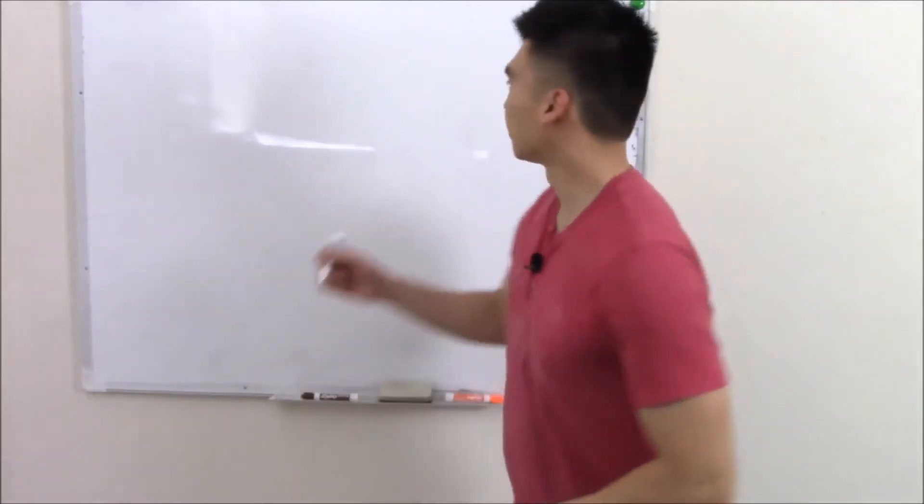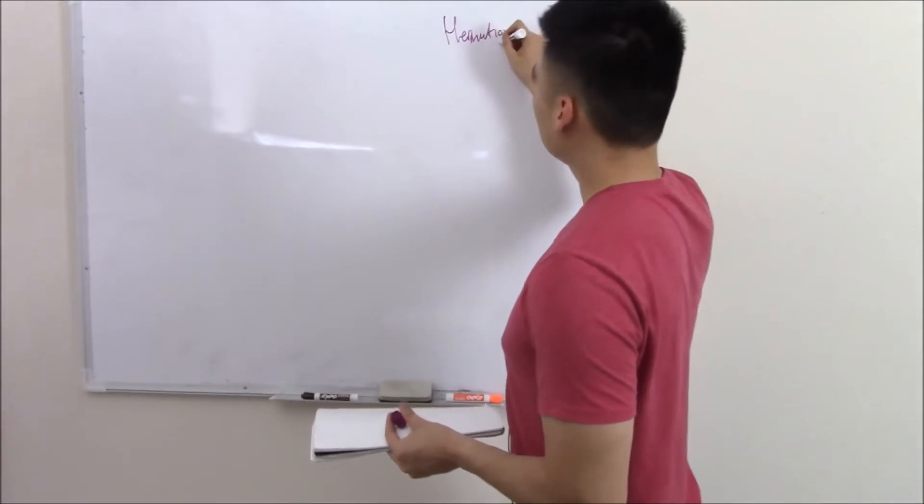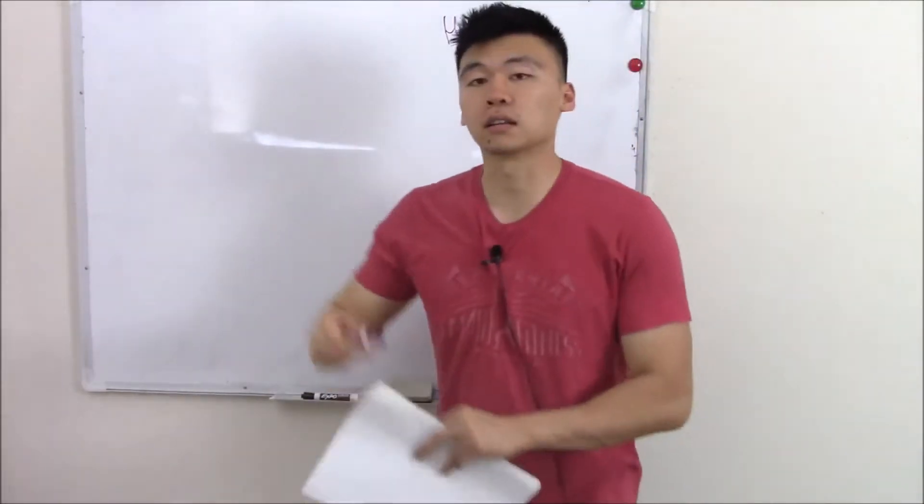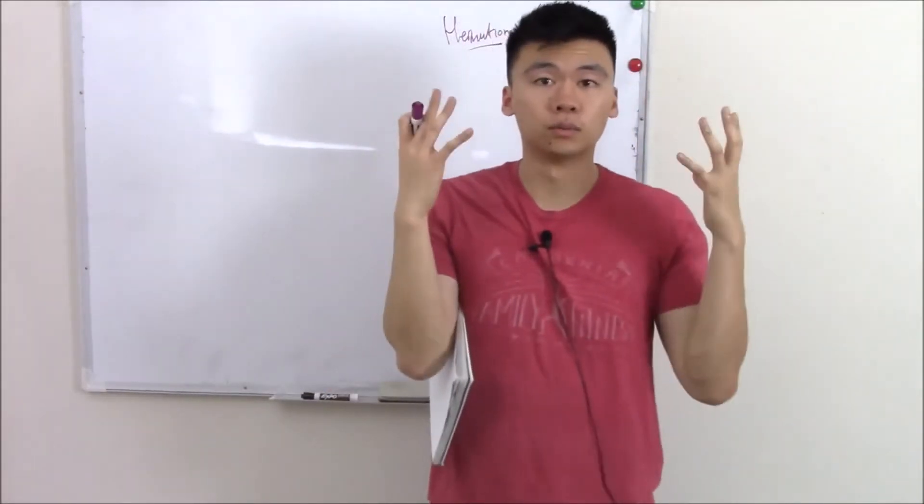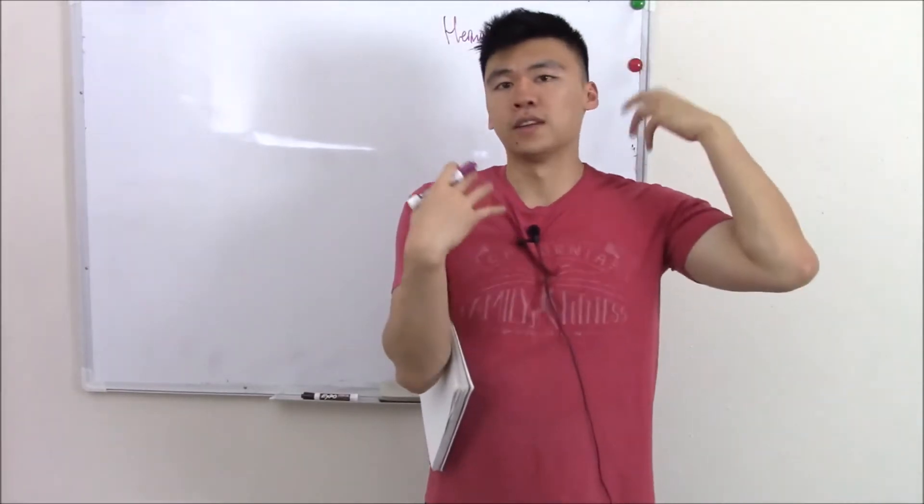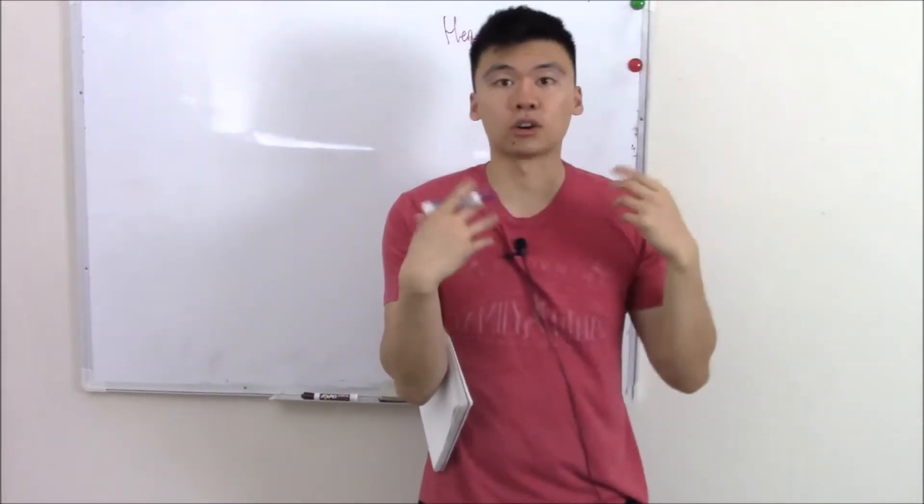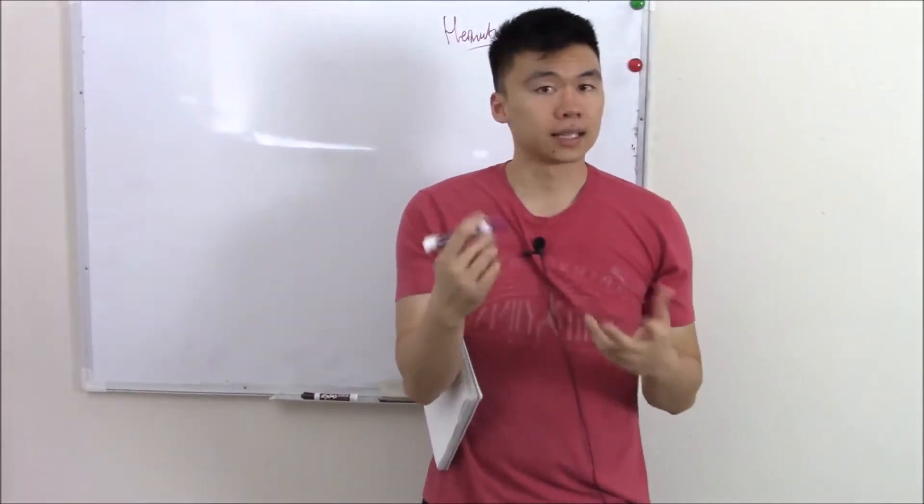This video is on brain herniations. Your brain in your skull is a very enclosed space. There's not a lot of room. If you have a mass, a tumor, fluid, or a hemorrhage like an epidural hemorrhage, it can push and compress your brain and herniate your brain. That's the topic of this video.